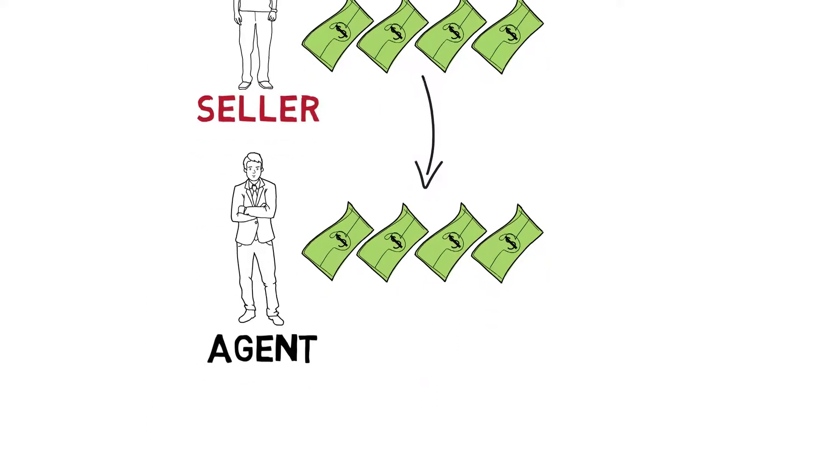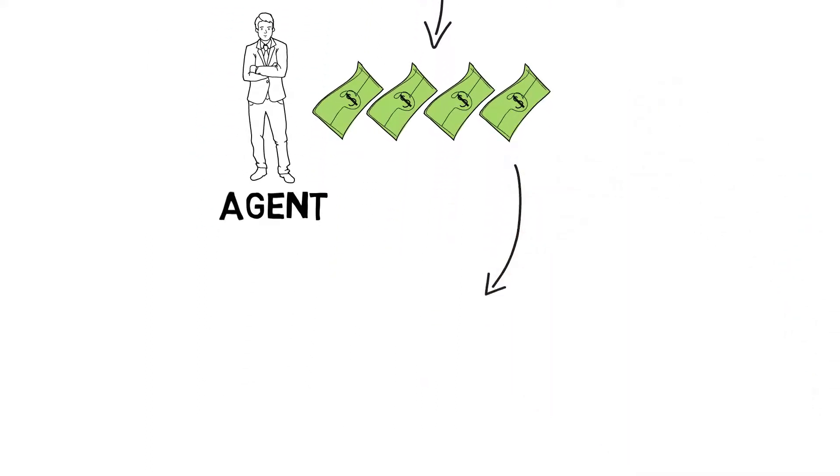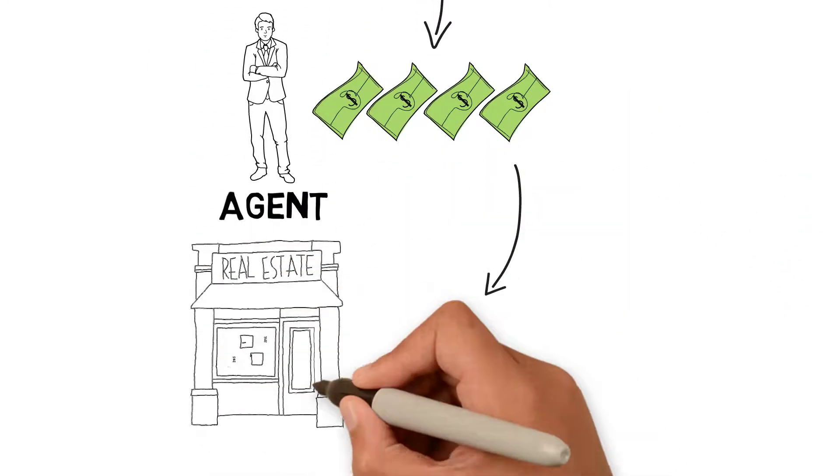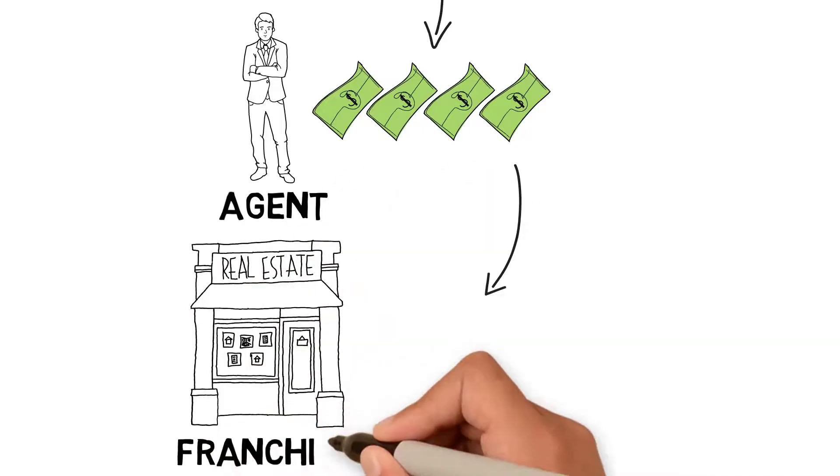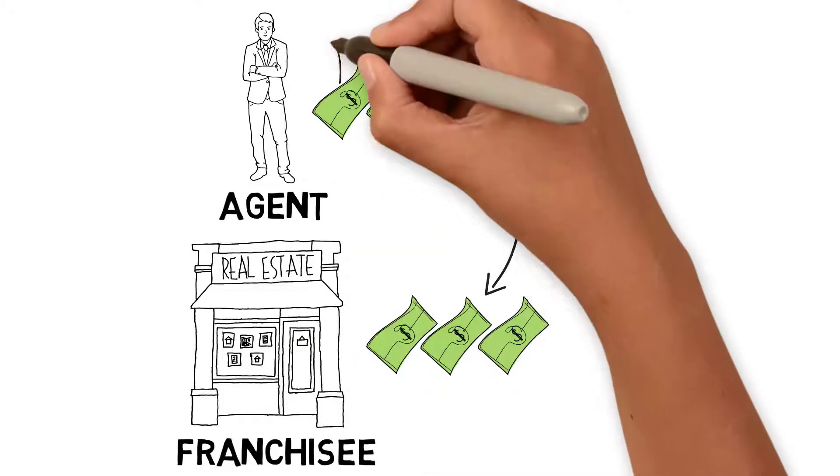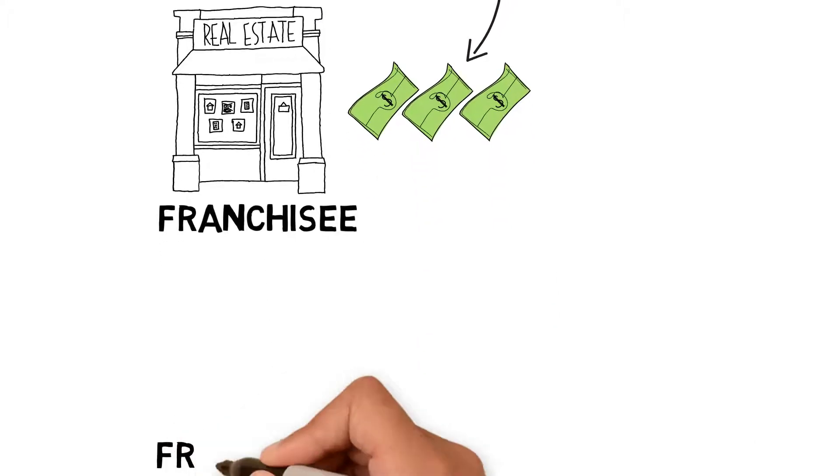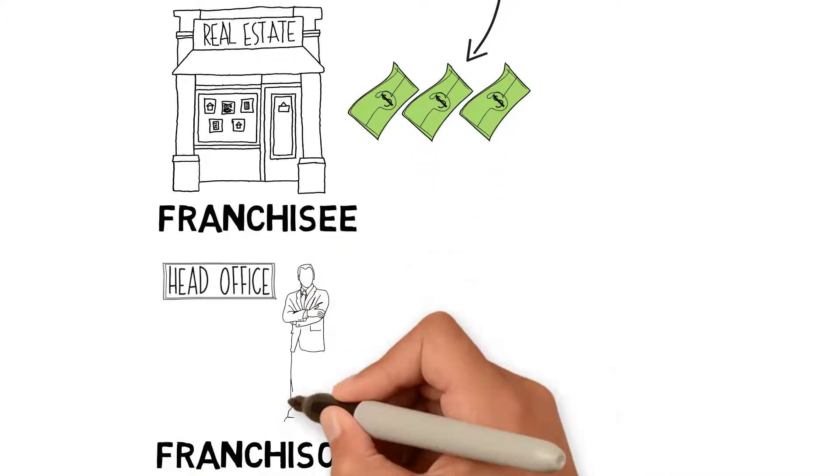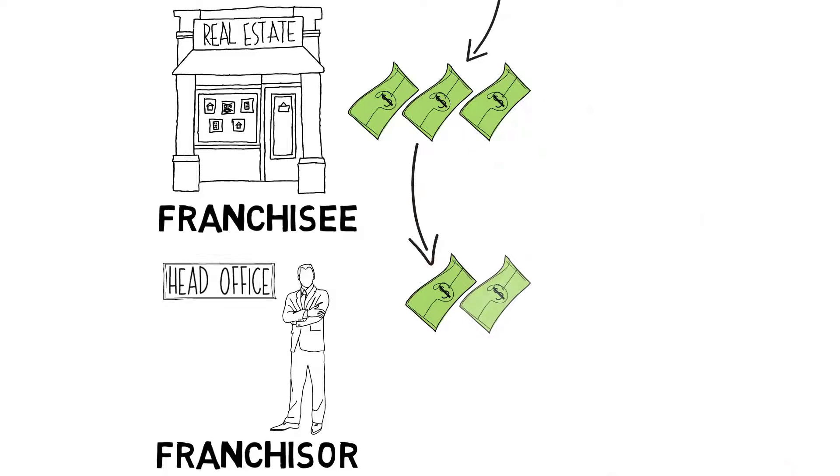The agent has to pay the owner of their local business, the franchisee, who takes a cut of the commission. The franchisee then has to pay a franchisor in head office for these big brands, so there's another cut.